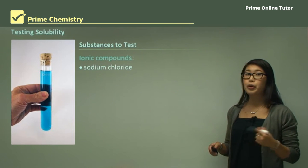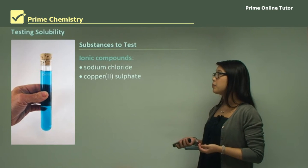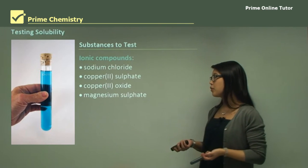To test, we're going to look at some ionic compounds, and there's quite a few: sodium chloride, copper sulfate, copper oxide, magnesium sulfate, potassium iodide, and nickel chloride.